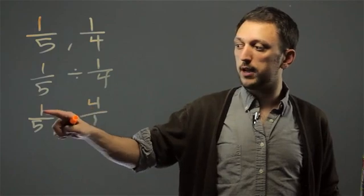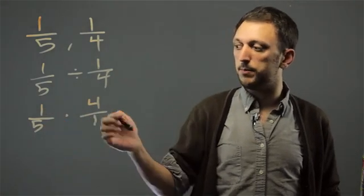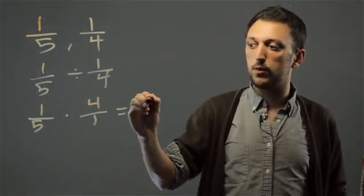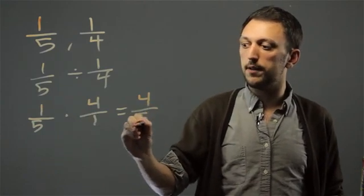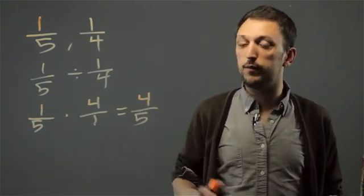When we're multiplying fractions, top times top, bottom times bottom. So 1 times 4 is 4, 5 times 1 is 5, and we get 4/5.